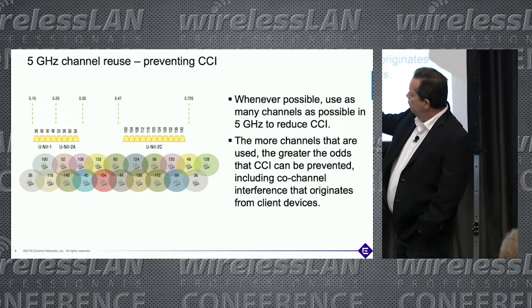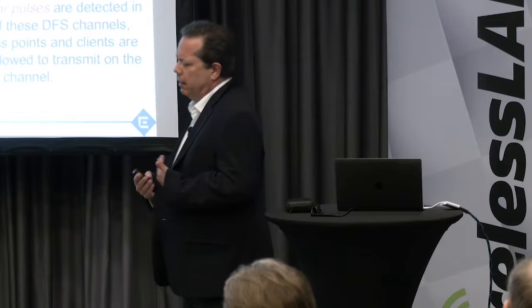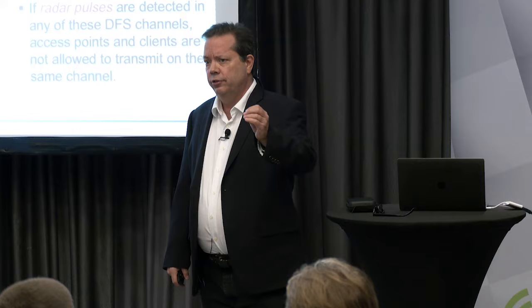In most cases you should use the dynamic frequency selection channels, because the more channels you have in a 5 GHz channel reuse pattern, the less chance you'll have of CCI, meaning a better performing wireless LAN. The DFS channels are those highlighted in yellow — in the UNII-2A and UNII-2C bands. It's all about radar avoidance, so that your Wi-Fi — whether enterprise or home — doesn't interfere with weather radar and military radar.